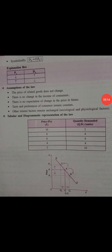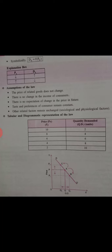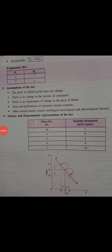Second assumption: there is no change in the income of the consumer. If there is no change in consumer's income, only then will the law apply. If income changes, the law will not apply — because if the consumer's income increases, they may shift from a lower quality good to a higher quality good, changing their quantity demanded regardless of price. So consumer income should remain completely equal and constant.